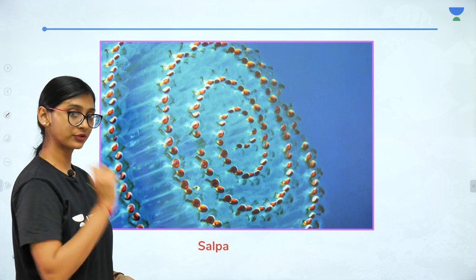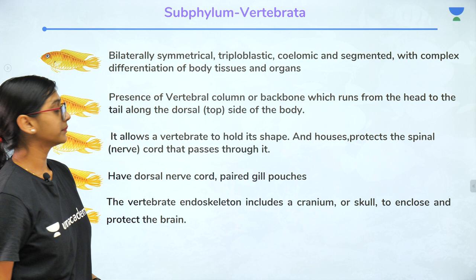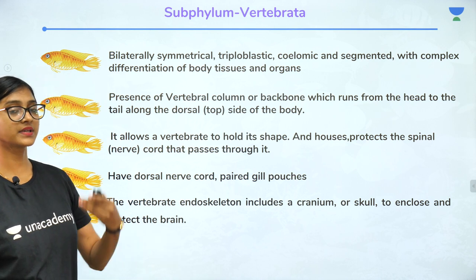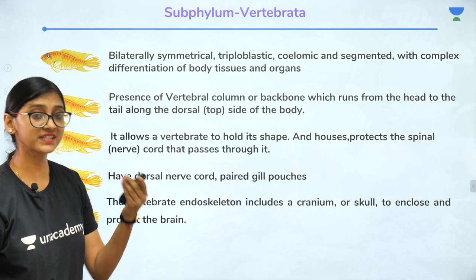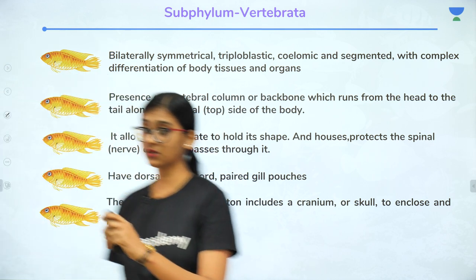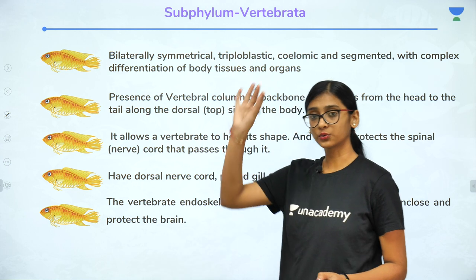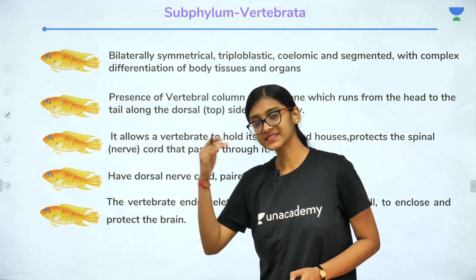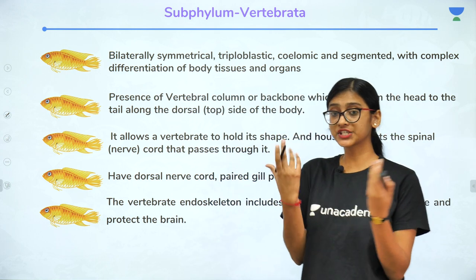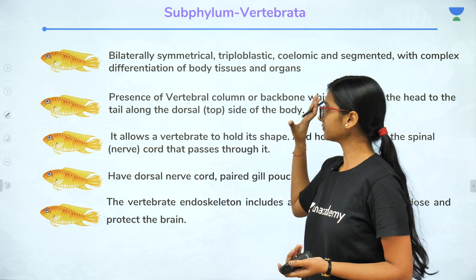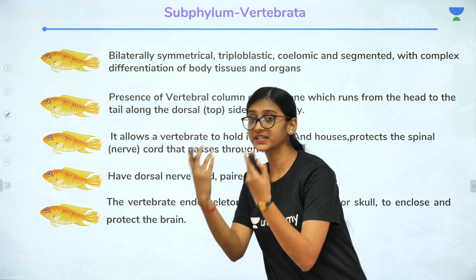So we have seen Cephalochordata and Urochordata under Protochordata, under Chordata. Now we'll talk about Vertebrata. Vertebrata has a vertebral column — vertebrae. The body is bilaterally symmetrical, triploblastic, true coelomates, and differentiated into head, thorax, and abdomen, with specialized tissues and organs.